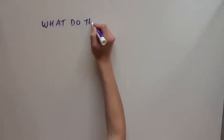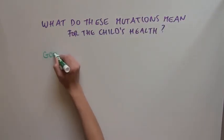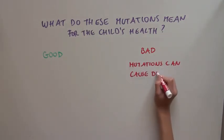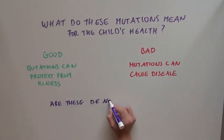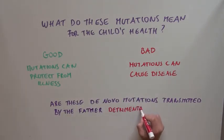So what do all of these mutations mean when it comes to the health of the child? Are they good or are they bad? Mutations are often thought of as being detrimental, and they in fact can cause disease, and this happens most often. But mutations can also be beneficial by protecting you from illness. So are these de novo mutations transmitted by the father detrimental to the child's health, or are they beneficial?